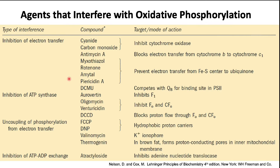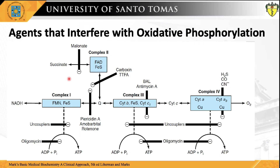The next slide illustrates the different poisons according to their sites of action — the different complexes including complex V or the ATP synthase. We have toxic agents that interfere with electron transfer within complex I, complex II, complex III, and complex IV. Not shown are the poisons disrupting phosphorylation in complex V or the ATP synthase. We will classify them according to their mechanism of action rather than their site of action.